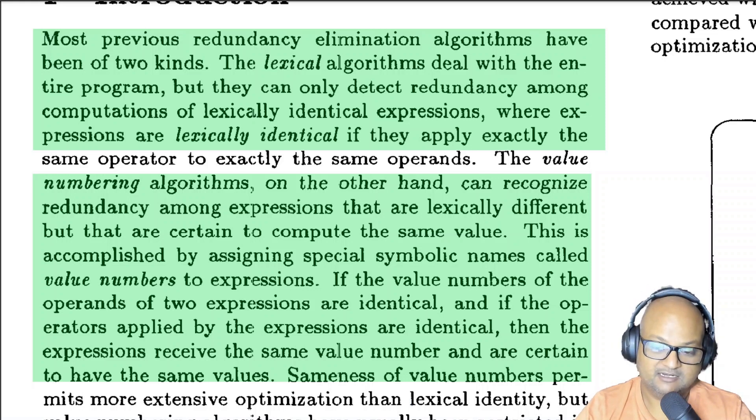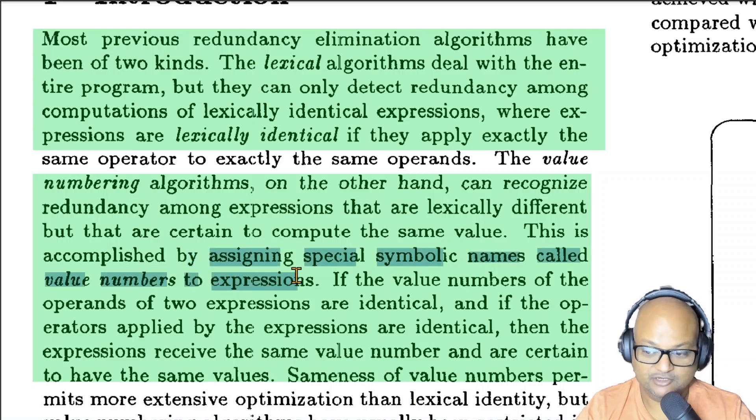What SSA does is assign symbolic names, and that's what the authors call value numbers, to expressions. And that is done in such a way that if those value numbers are identical even if the expressions from which they were computed are different they are guaranteed to compute the same value and so one of them can be optimized away.